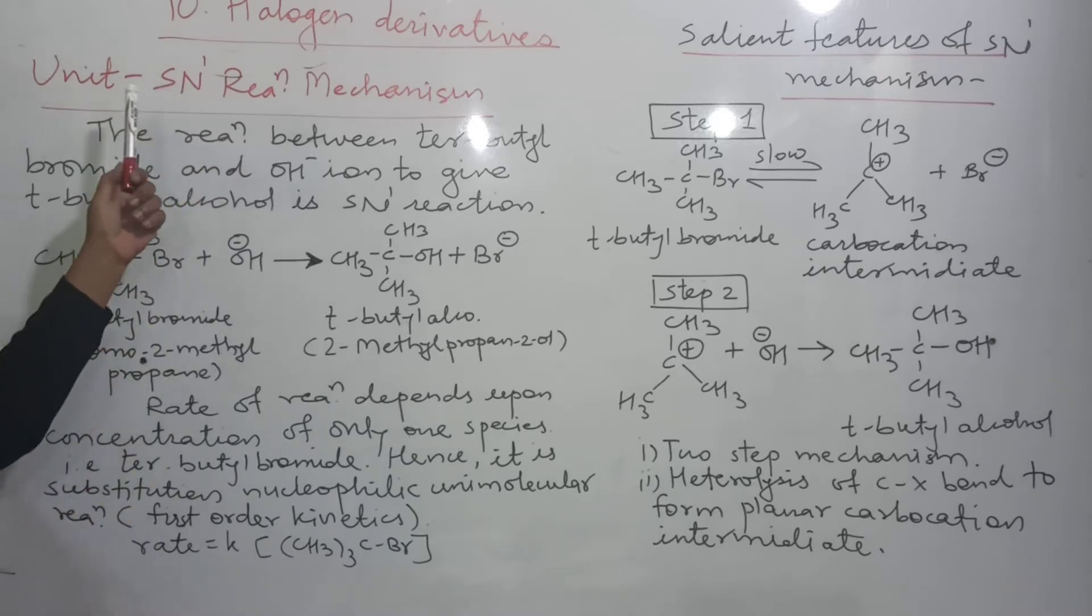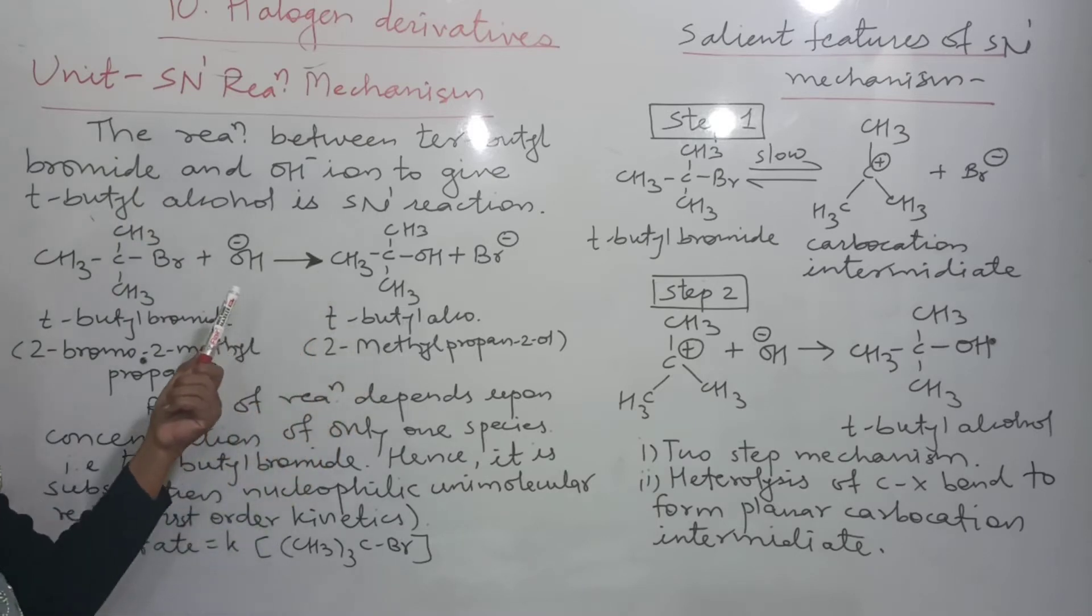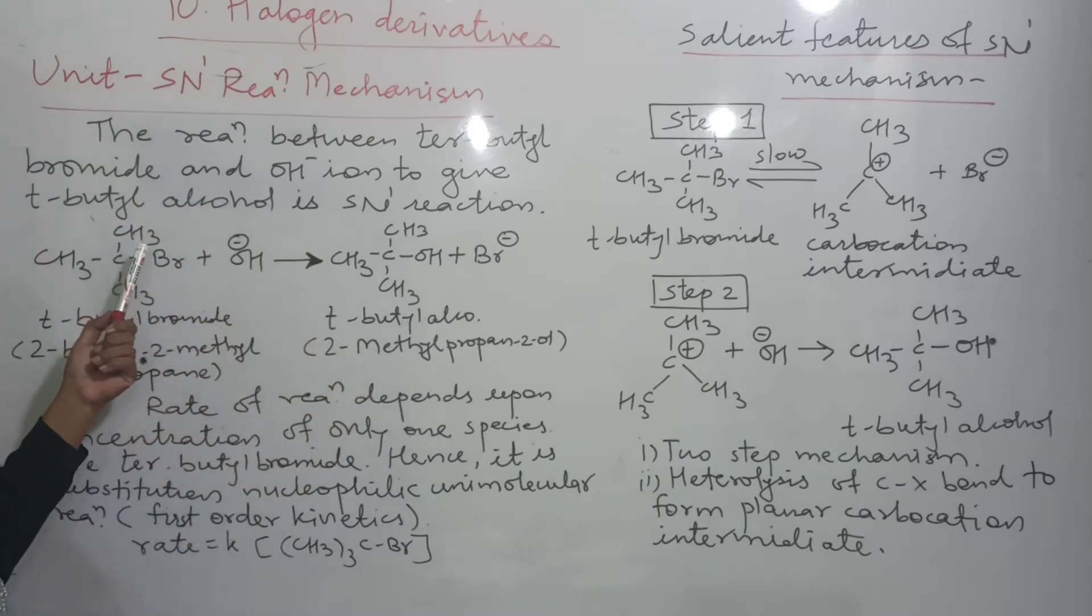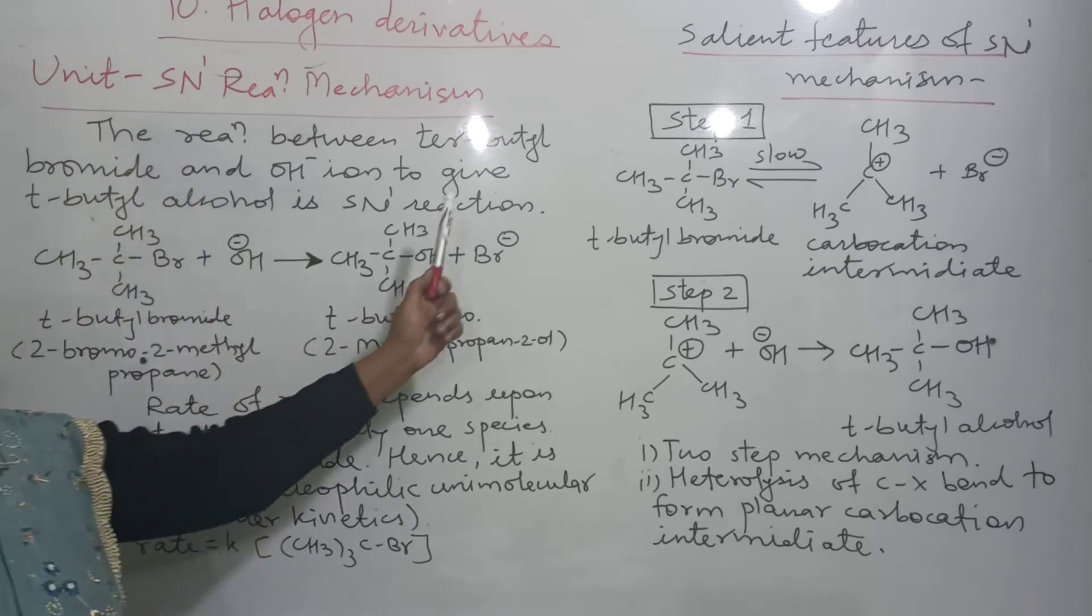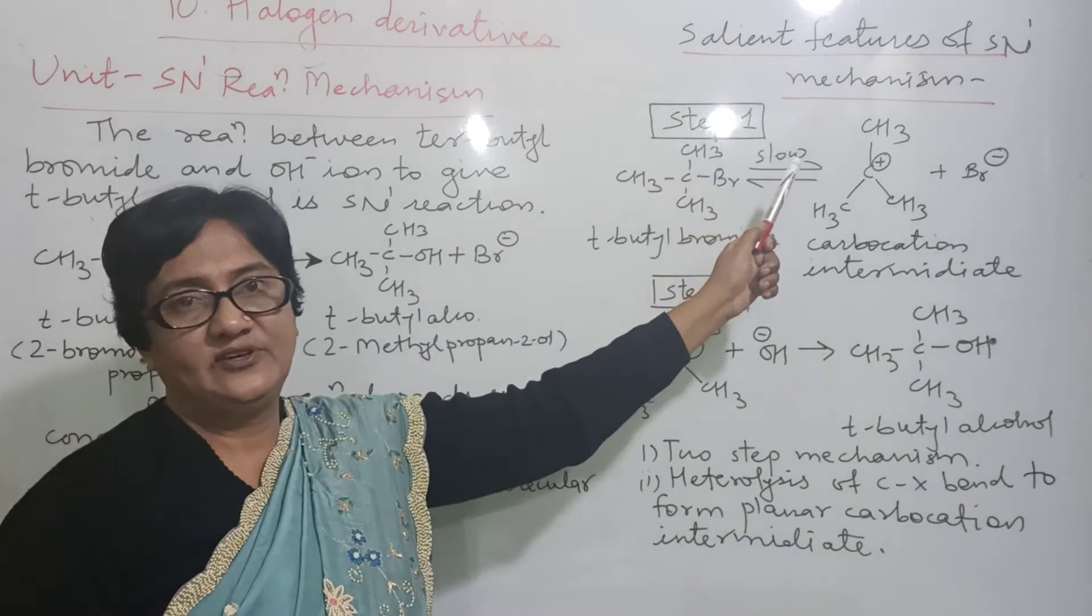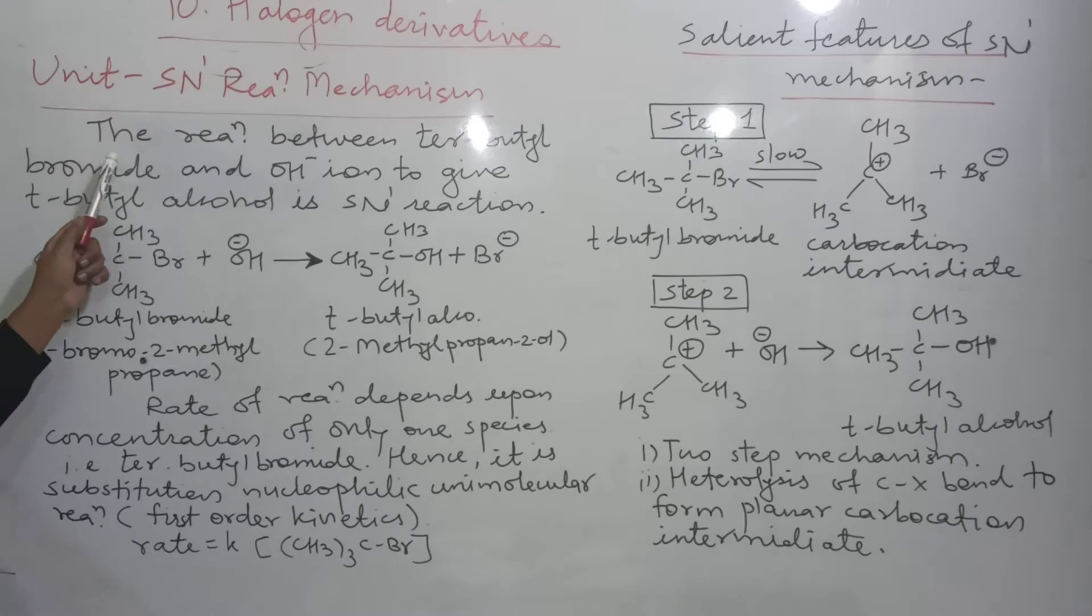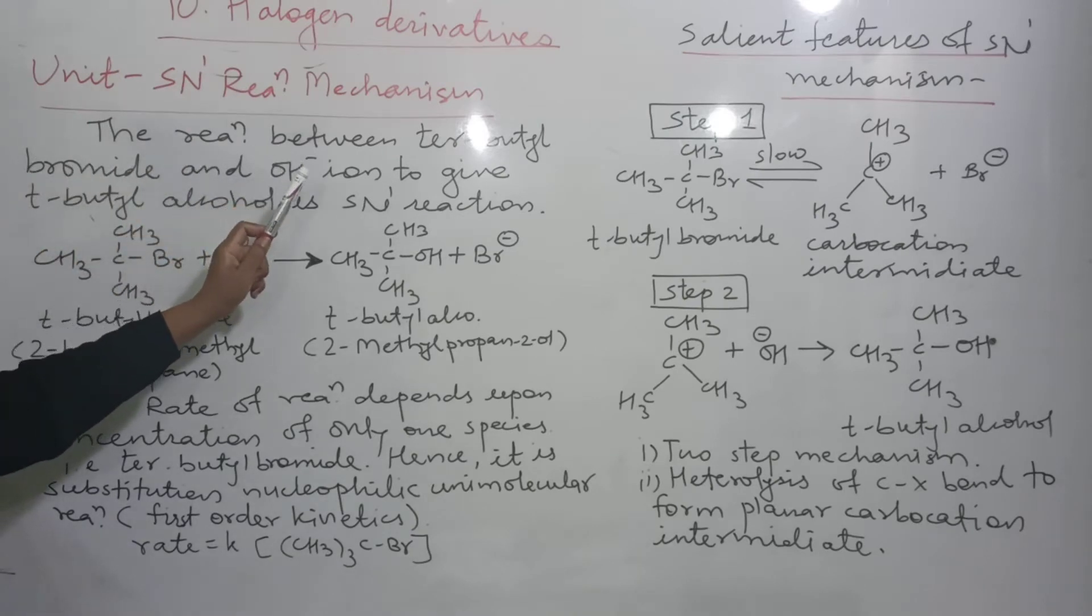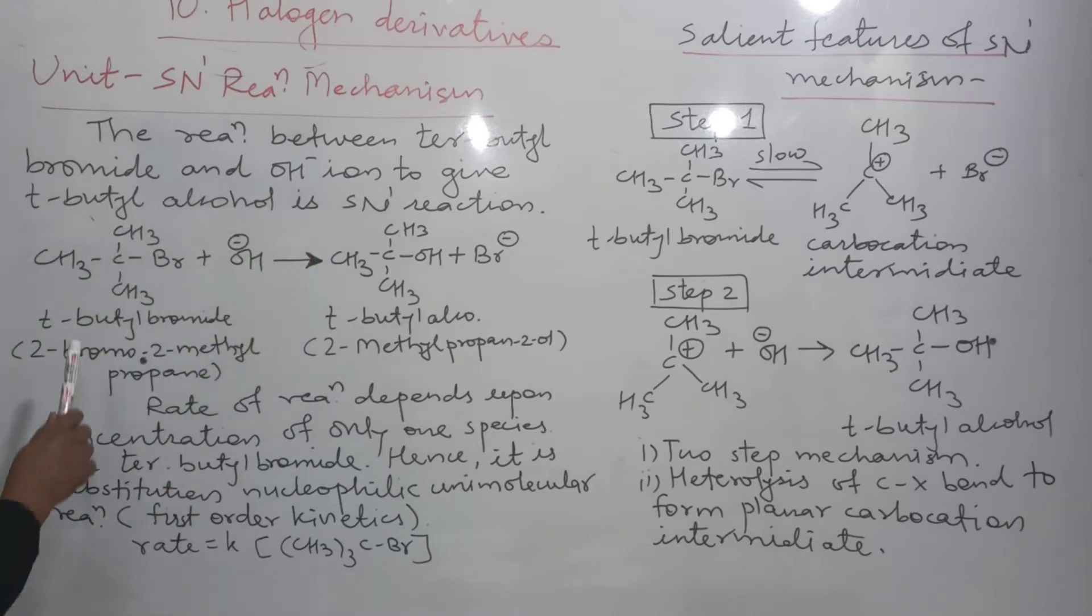Here again the points are identical with SN2, only some points of differences are there. First, we are going to write the example, then mention the first order reaction, then salient features of the SN1 reaction mechanism. The reaction between tertiary butyl bromide and hydroxide ion to give tertiary butyl alcohol is SN1 reaction. This is the reaction.